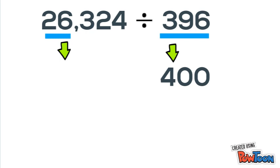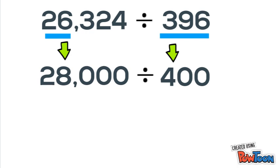So we can either round up to 28,000 or down to 24,000. Both estimates would be fairly good, and since I rounded up for my divisor, I'm going to round up to 28,000. So we'll have 28,000 divided by 400.